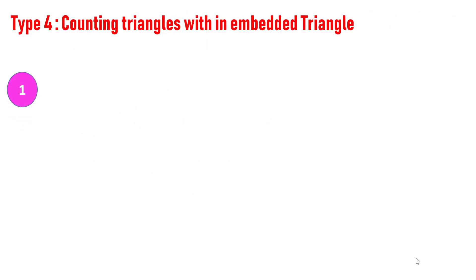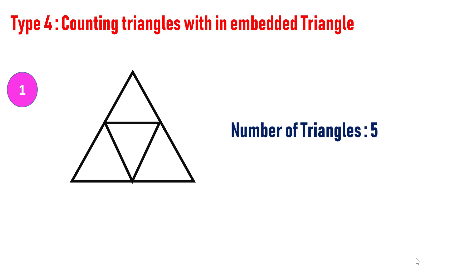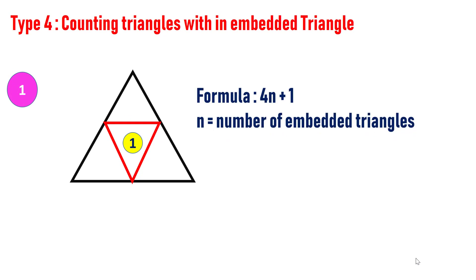Let's move on to type four — how to count number of triangles within an embedded triangle, where a triangle is embedded inside a triangle and so on. In this figure, counting manually yields five. The shortcut formula for this kind of pattern is 4n plus 1, where n is the number of embedded triangles. Here n equals one, so number of triangles is four into one plus one, which is five.